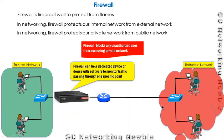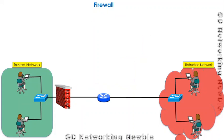As an example, I have shown here a Cisco firewall device. If the firewall receives some packet or information from the untrusted network which is trying to go to the trusted network, the firewall has to make a decision.